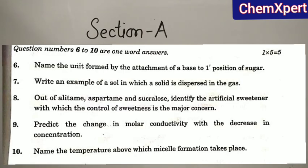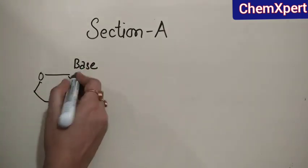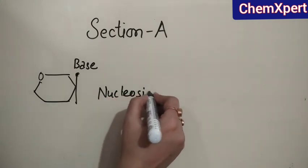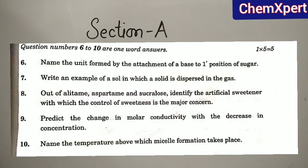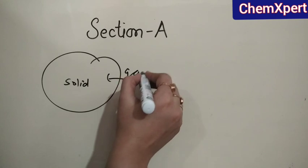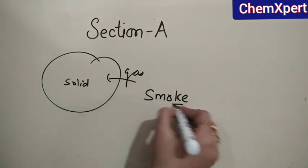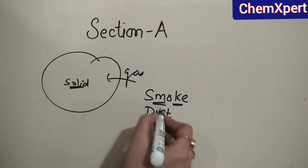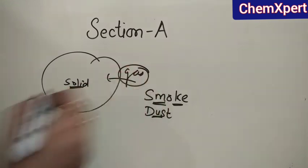Question 6: name the unit formed by the attachment of a base at the first position of a sugar. When a base is attached at the first position of the sugar, it is known as a nucleoside. Question 7: write an example of a sol in which solid is dispersed in a gas phase. Examples are smoke or dust, where solid is the dispersed phase and gas is the dispersion medium.